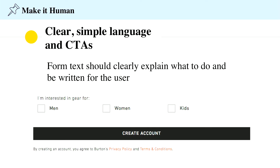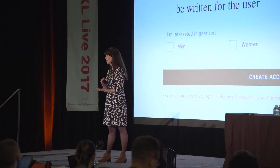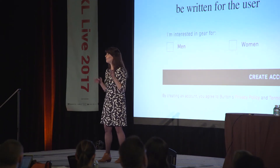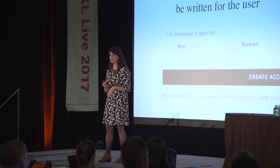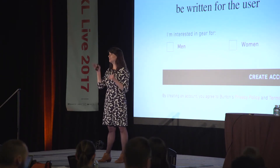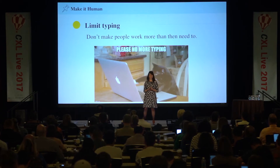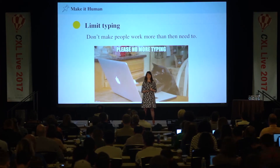Our last guiding principle is to make it human. Remember, this can be the first interaction that this user is having with your brand, so it's important to make it as relatable as possible. Form text should be written clearly and explain what's going on in a way that person is going to understand — clear, simple, specific language and calls to action. I liked this example from Burton Snowboards: it said 'I'm interested in gear for men, women and kids' when signing up for their emails. This is a really friendly way to ask a question that's going to be critical for all future marketing efforts. We also want to limit typing — we don't want to ever make people work harder than they need to.